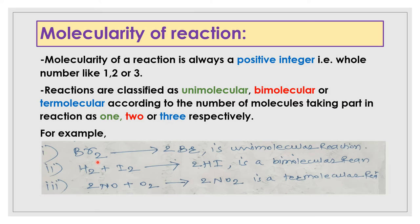For example, Br2 giving 2Br involves only one Br2 molecule, so it is a unimolecular reaction. H2 + I2 giving 2HI involves one molecule of H2 and one of I2, so it is bimolecular with molecularity 2. And 2NO + O2 giving 2NO2 involves three molecules total, so it is a termolecular reaction.